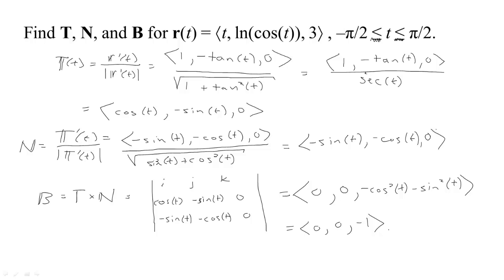So we've got our unit tangent, unit normal, and binormal. A good check when doing a cross product is to verify the result is perpendicular to the two original vectors. If you dot B with N you get 0, so it's perpendicular to N, and if you dot B with T you also get 0, confirming B is orthogonal to both.